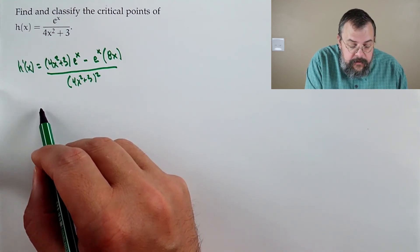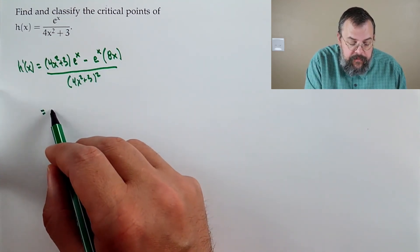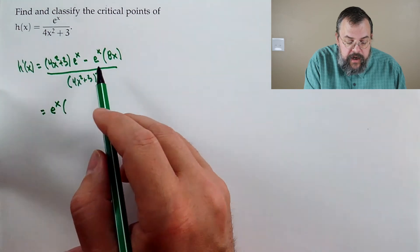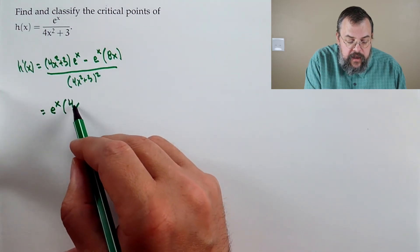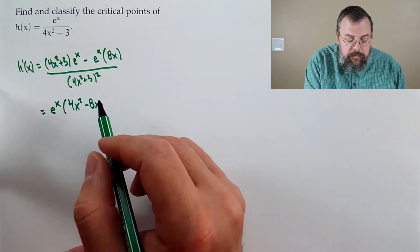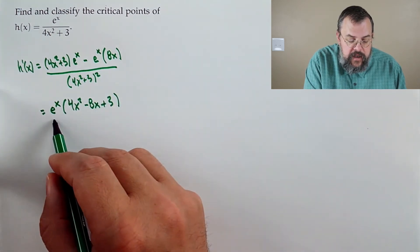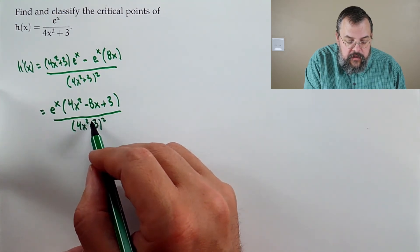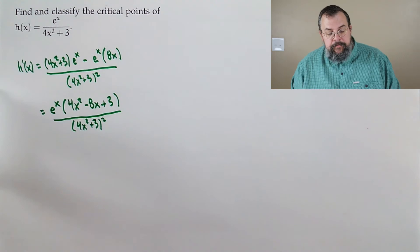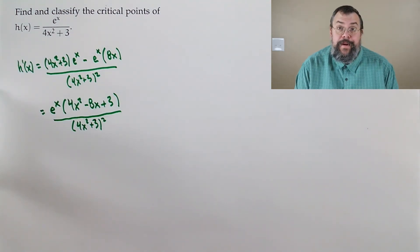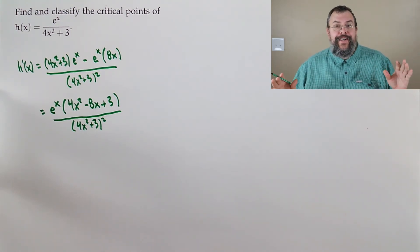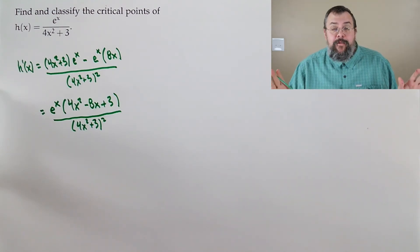We can factor e to the x out of the top numerator, giving e to the x times (4x squared plus 3 minus 8x), which we can write as 4x squared minus 8x plus 3, all divided by (4x squared plus 3) quantity squared. The derivative is never undefined, and e to the x is never zero, so we focus on setting 4x squared minus 8x plus 3 equal to zero.